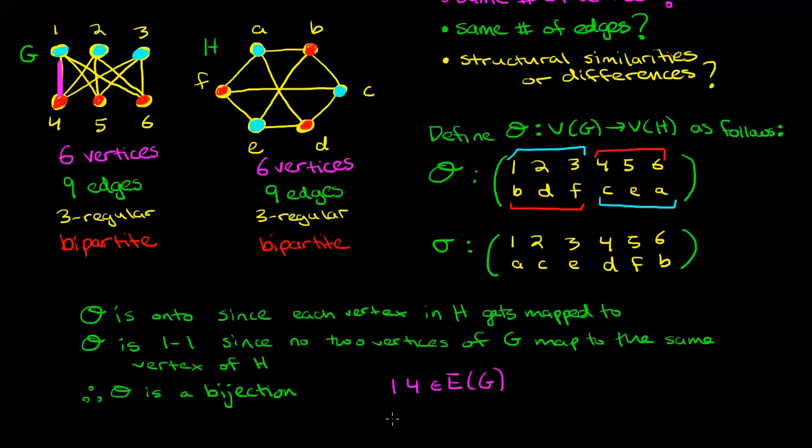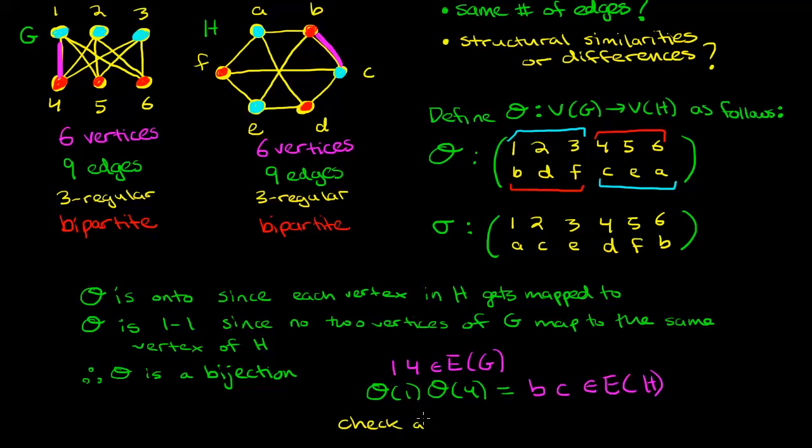Now we need to check that adjacency is preserved and non-adjacency is preserved. So I'll take as an example just one edge to demonstrate this. If I look at the edge 1, 4 in the graph G, I know that this is an edge so I have 1, 4 in the edge set of G. Now I have to take a look at theta of 1, theta of 4 and determine if that is an edge in the new graph H. So theta of 1 is B and theta of 4 is C. And if you look up at the graph H, yes indeed B and C are adjacent in the graph H. So that's excellent. Adjacency is preserved for this one edge. You'll need to do the same check for every edge in the graph G and show that it maps to an edge in H. Similarly, if you take any pair of non-adjacent vertices in the graph G, you'll find that they are not adjacent in the graph H. So after you've checked that all the edges are preserved, you'll know that G is indeed isomorphic to H using this particular isomorphism.